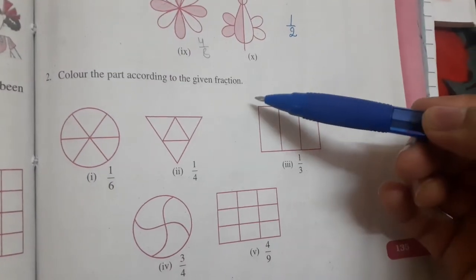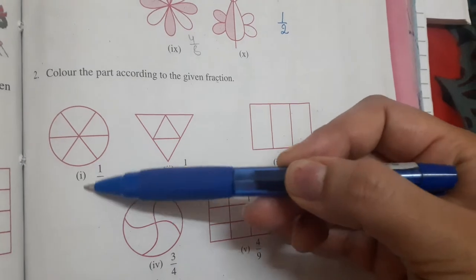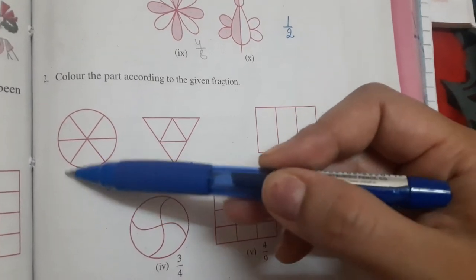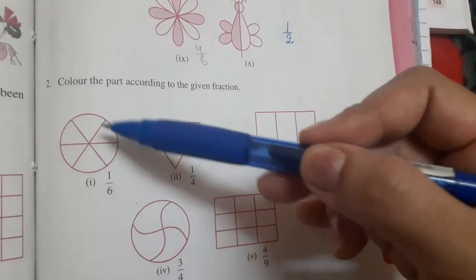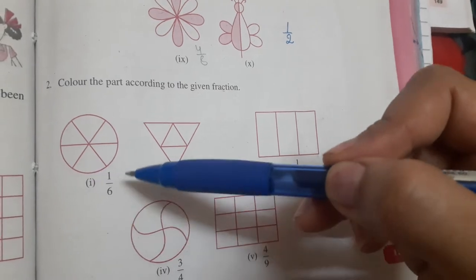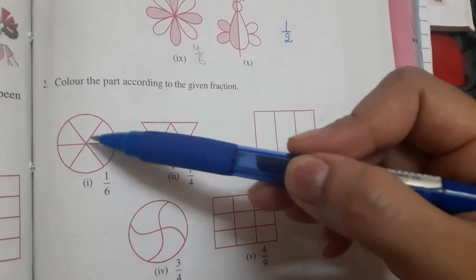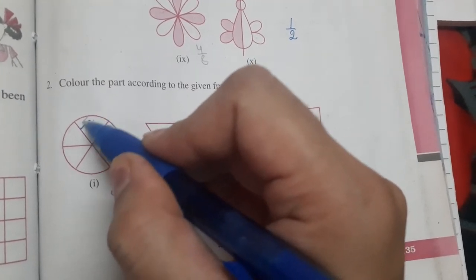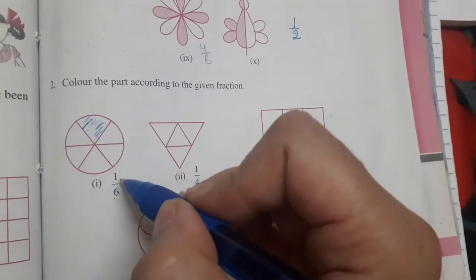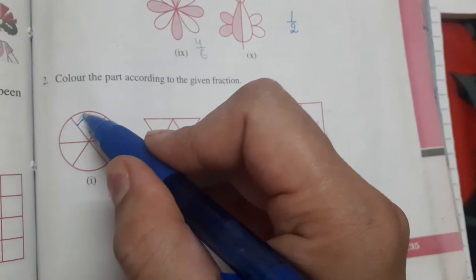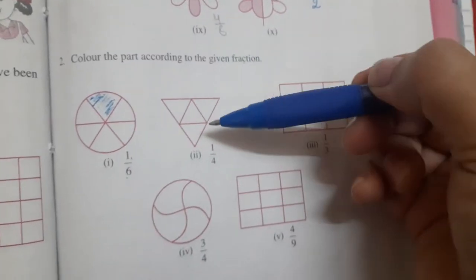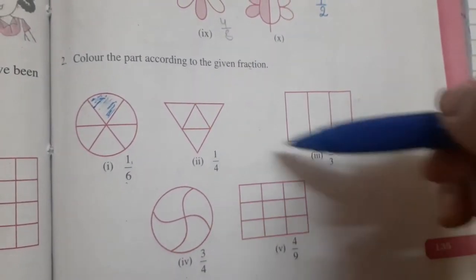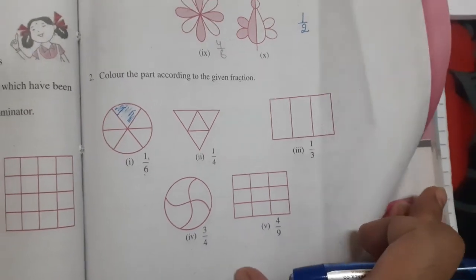Now color the part according to the given fraction. The fraction which is given to you. Here, the fraction is given and you have to shade the part according to the given fraction. Here, 1 part is shaded. So you will shade 1 part out of the 6 parts. Total are 6, I have to shade only 1, so I will shade 1 part out of 6. Same way, these questions you all will do yourself in the book only.